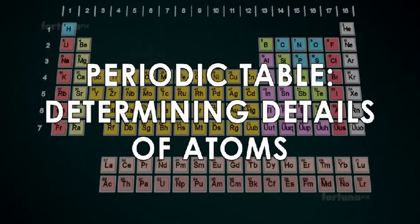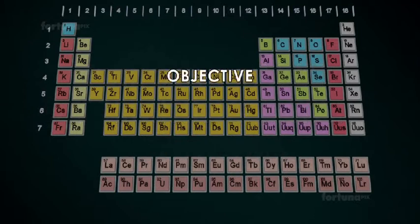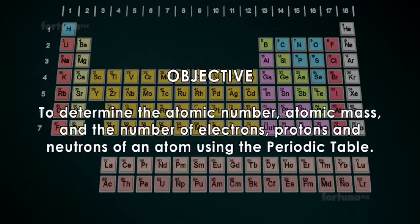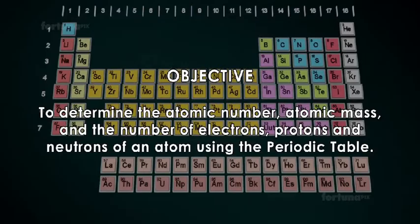Periodic Table: Determining Details of Atoms. Objective: To determine the atomic number, atomic mass, and the number of electrons, protons, and neutrons of an atom using the periodic table.